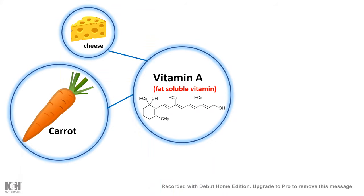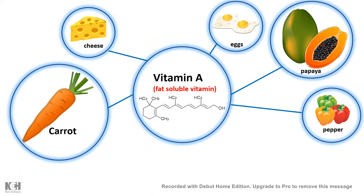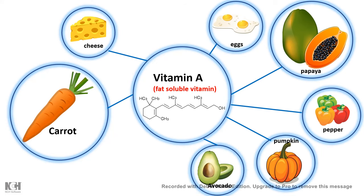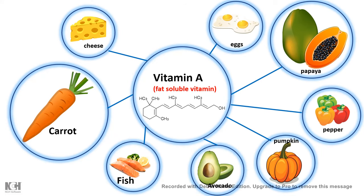Other than carrots, there is cheese, eggs, papaya, bell peppers, pumpkin, avocado, and even from fish we can derive vitamin A.